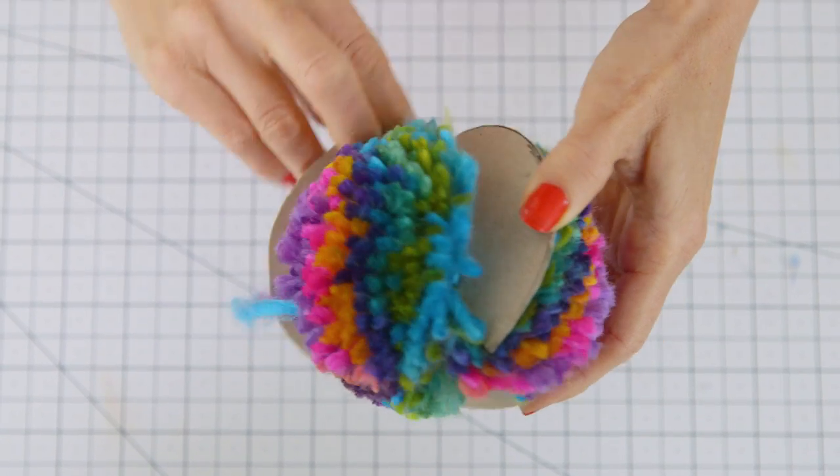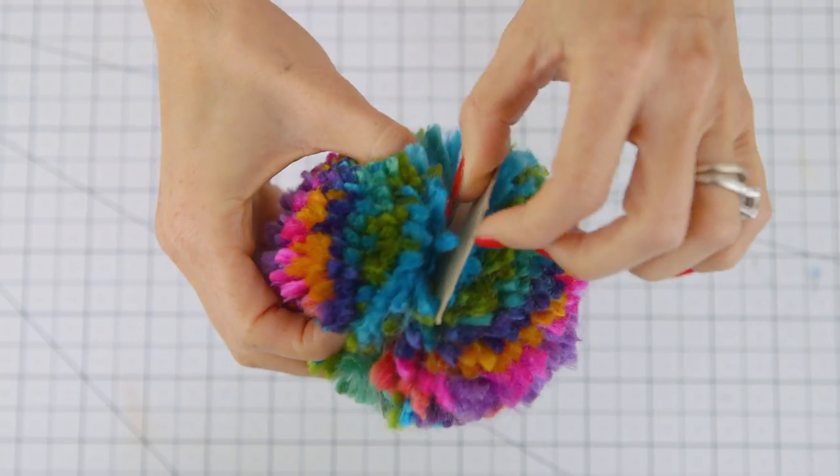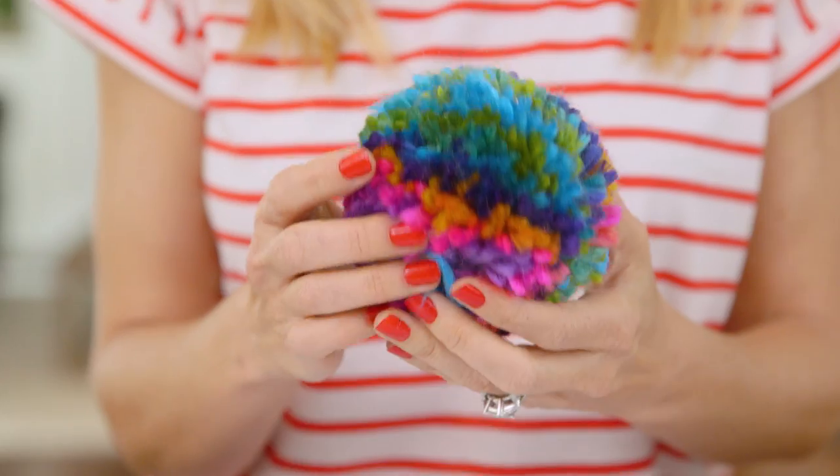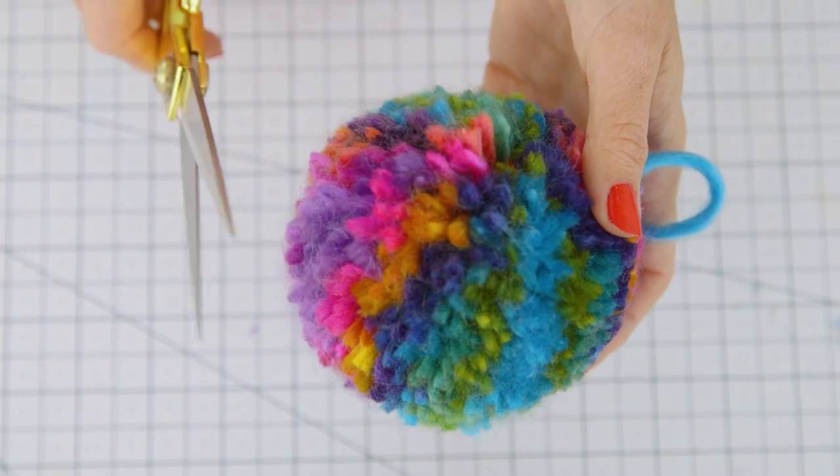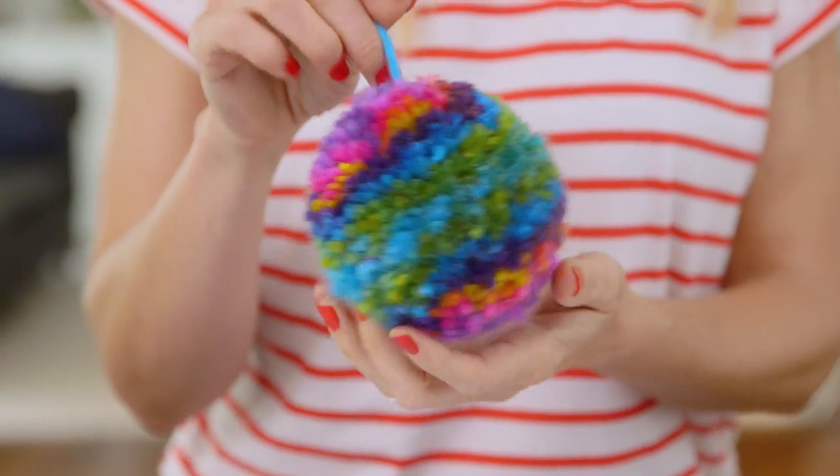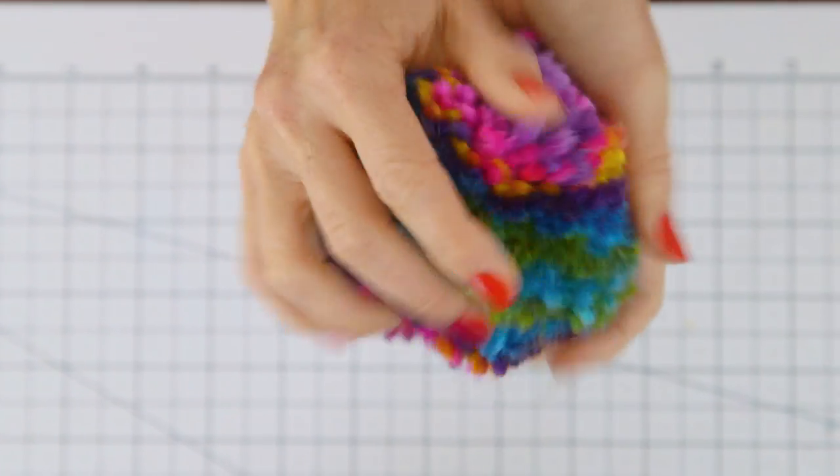And now for the final reveal, let's remove the cardboard frame. This part is very satisfying. And you can see it's pretty much a perfect circle, which is why I love this method, but if it needs a little shaping, you can prune it with some scissors. And ta-da! We have this adorable soft squishy pom-pom that we made in just a few minutes.